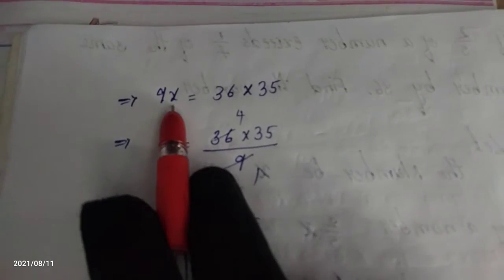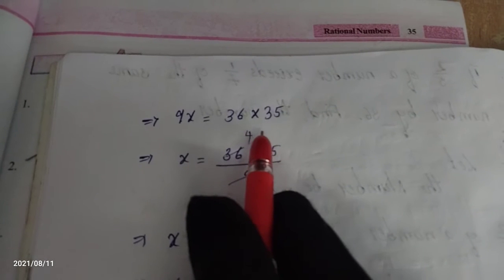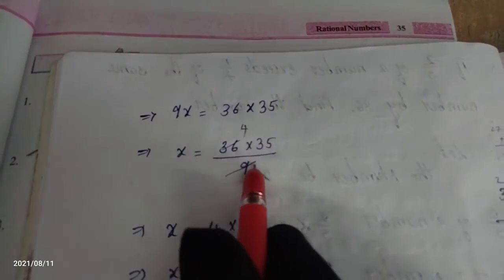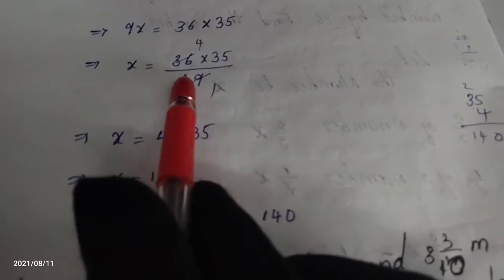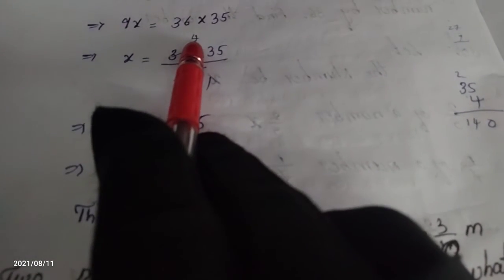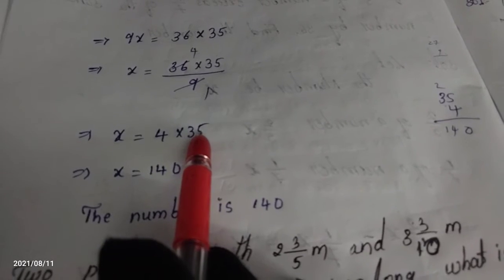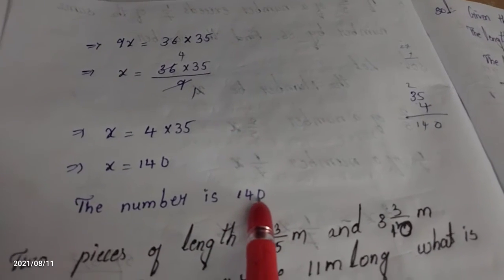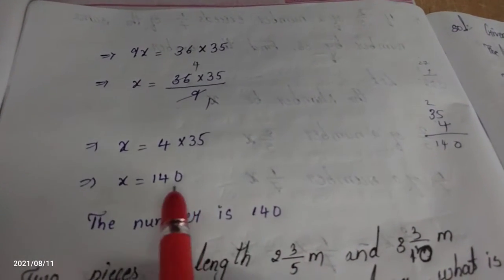To find X, we divide both sides by 9. 9 goes to the right side as a divisor. 9 fours are 36, so 36 divided by 9 is 4. Therefore X equals 4 into 35, which equals 140. The number is 140.